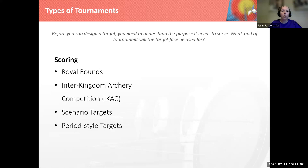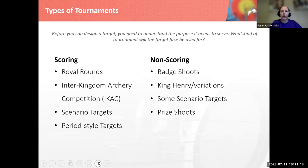What we will be focusing on in this presentation is scenario-style targets, where your target is not a standard round circle — it's usually some kind of drawing or painting. We'll also touch briefly on period-style targets. And then there are non-scoring types of tournaments. We see these as badge shoots — the Barony of Aidenvelt's Sun Dragon is very famous for their bunny shoot on Easter. The idea is that you shoot a bunny, you get a bunny badge. There are no numbers involved.